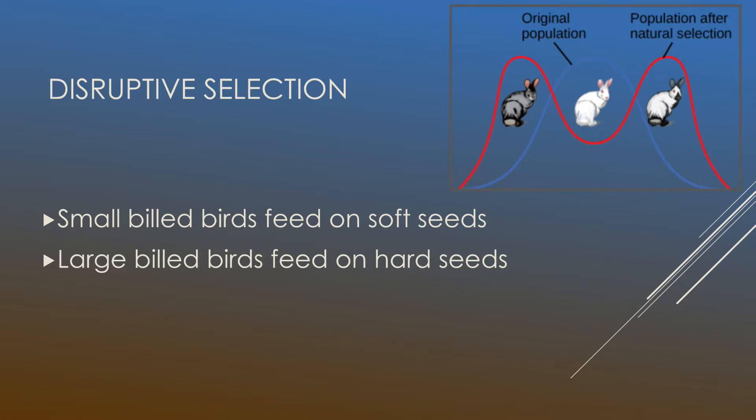Let's say they lose their normal form of nutrition. They won't have a source of nutrition that could help keep them alive. And basically what this means is that only the small-billed and the large-billed birds are able to have a source of nutrition that helps sustain them.